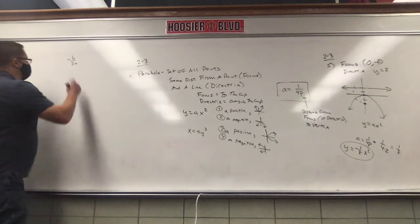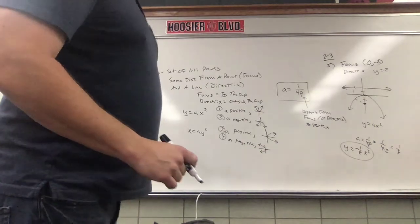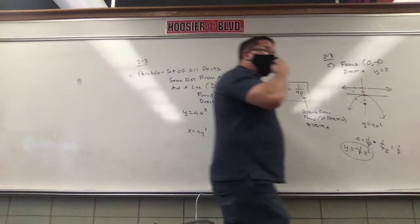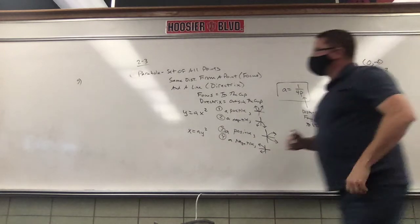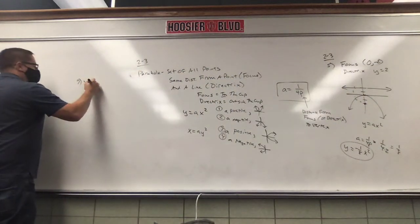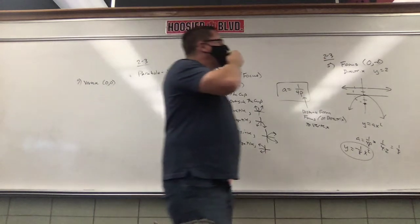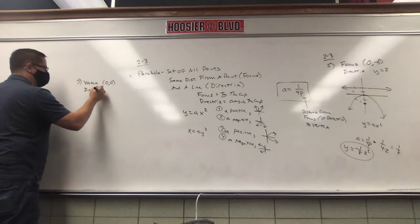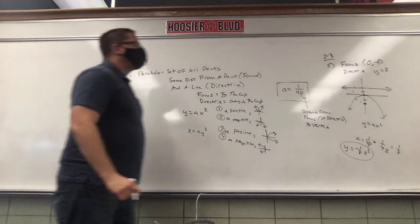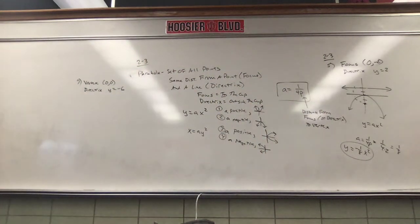Let's look at problem number 7. These will get easier. This one we have the vertex — and be careful, make sure you read these carefully. Last time they said the focus and directrix; here they give you the vertex and directrix. The vertex is (0,0), and the directrix is y equals negative 6.